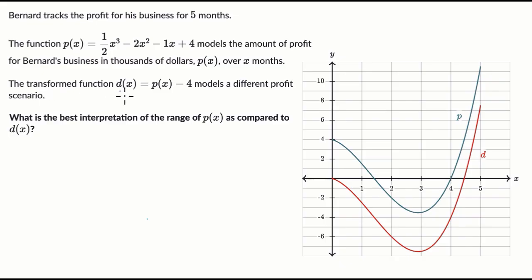The transformed function d(x), which is p(x) minus four, so essentially you just get rid of this plus four up here, models a different profit scenario. What is the best interpretation of the range of p(x) as compared to d(x)? Pause this video and think about it, and then we'll think about this together.